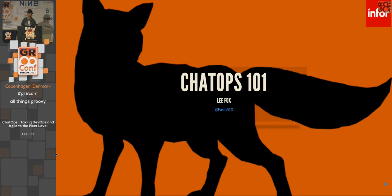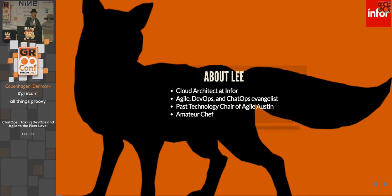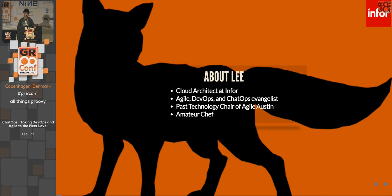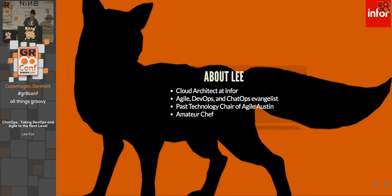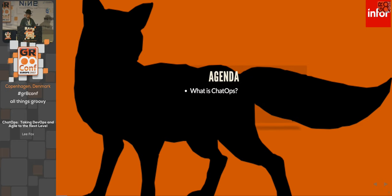A little bit about me: I'm a cloud architect, working with a really talented DevOps team. I'm an agile DevOps and ChatOps evangelist, working with agile groups in the community. I'm past technology chair of Agile Austin, which has provided a lot of insight into how we can take processes and make them more efficient. ChatOps is a great way to do it. I'm also an amateur chef, so we can trade recipes later.